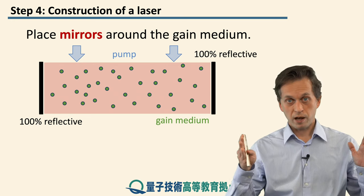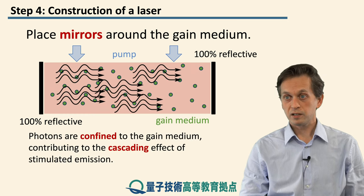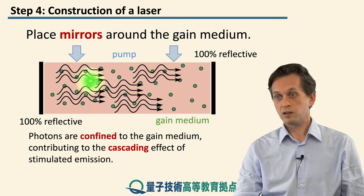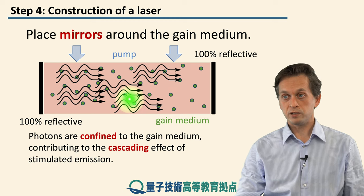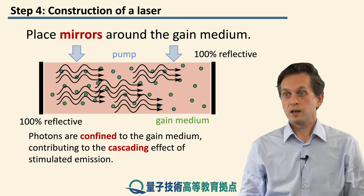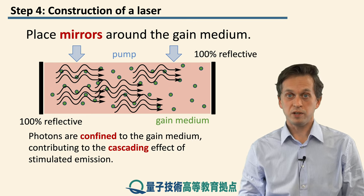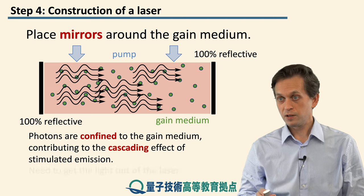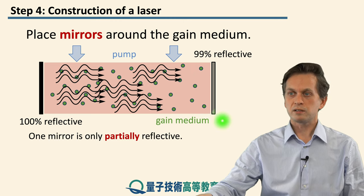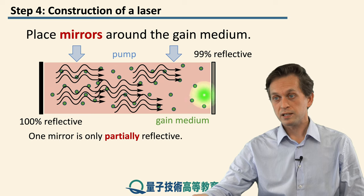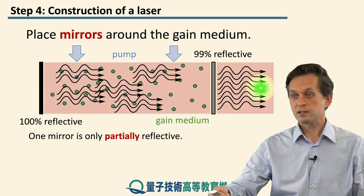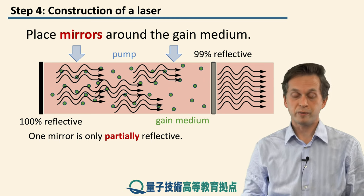Now we are pumping our gain medium with 100% reflective mirrors on both sides. We see lasing action inside the medium: the pumping creates population inversion, and the existing photons inside the gain medium stimulate emission on the lasing transition, creating more copies of those photons and cascading into lasing action. The only problem is the light is confined within the gain medium. So we take one of these mirrors and make it partially reflective — 99% reflective — allowing photons some probability to escape, giving us a nice monochromatic, in-phase, directional output. This is the basic principle of constructing a laser.